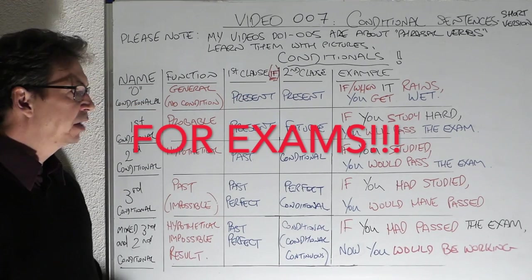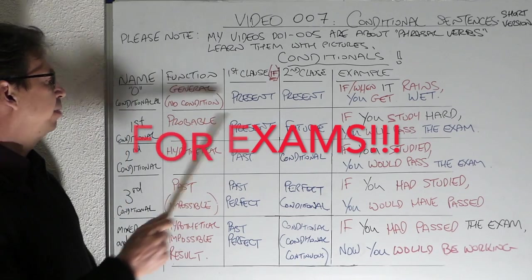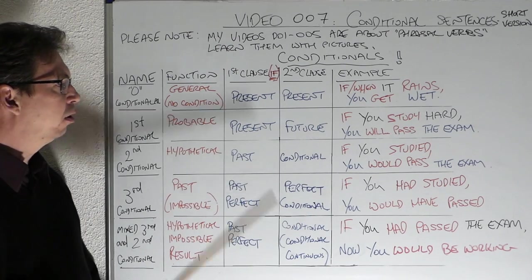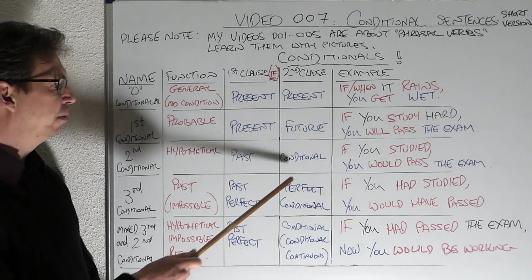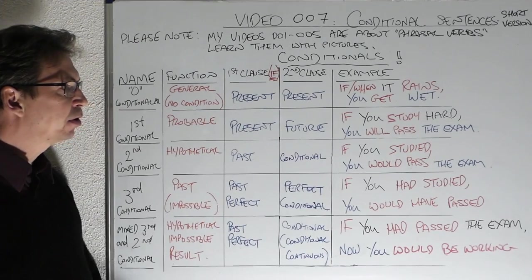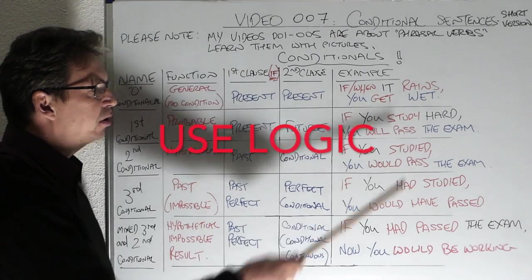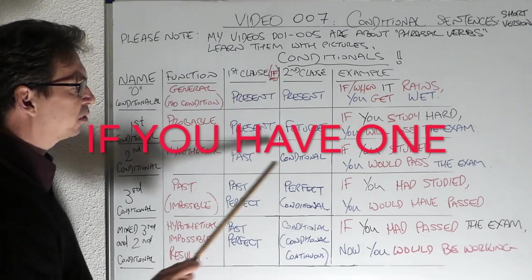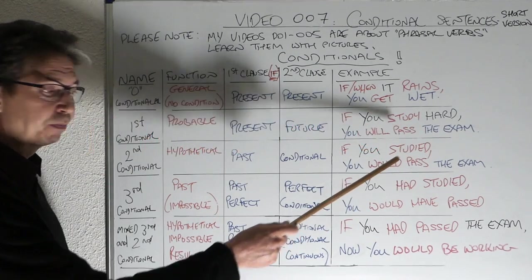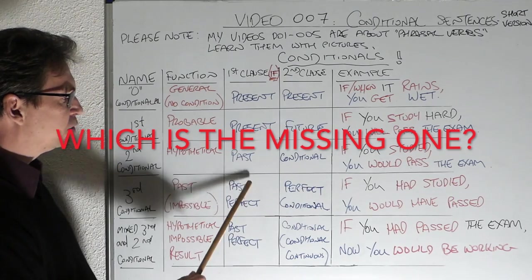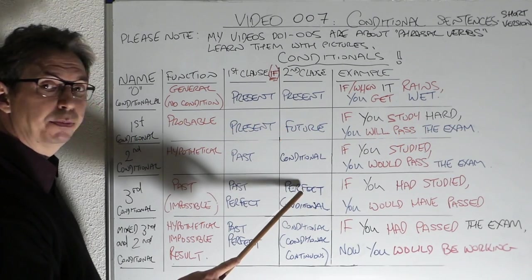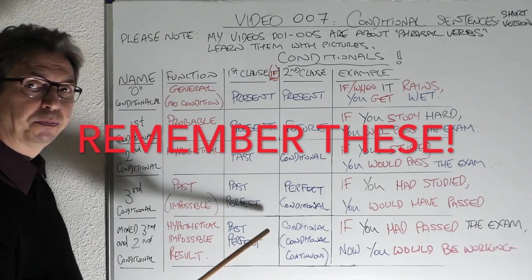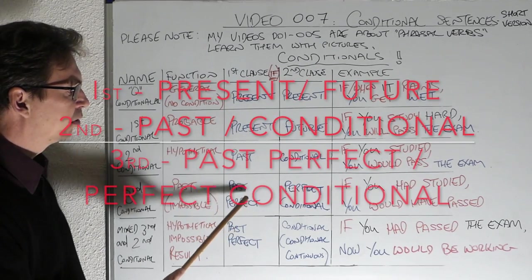If you're doing exams, remember this. Zero: present, present. First: present, future. Second: past, conditional. Third: past perfect, perfect conditional. If you see 'would pass' and the other part is blank, you know it's the conditional, so you use the past — 'studied'. Or if you see 'if you had studied', you know that's the past perfect, so you need the perfect conditional: 'you would have passed'. Remember: present–future, past–conditional, past perfect–perfect conditional.